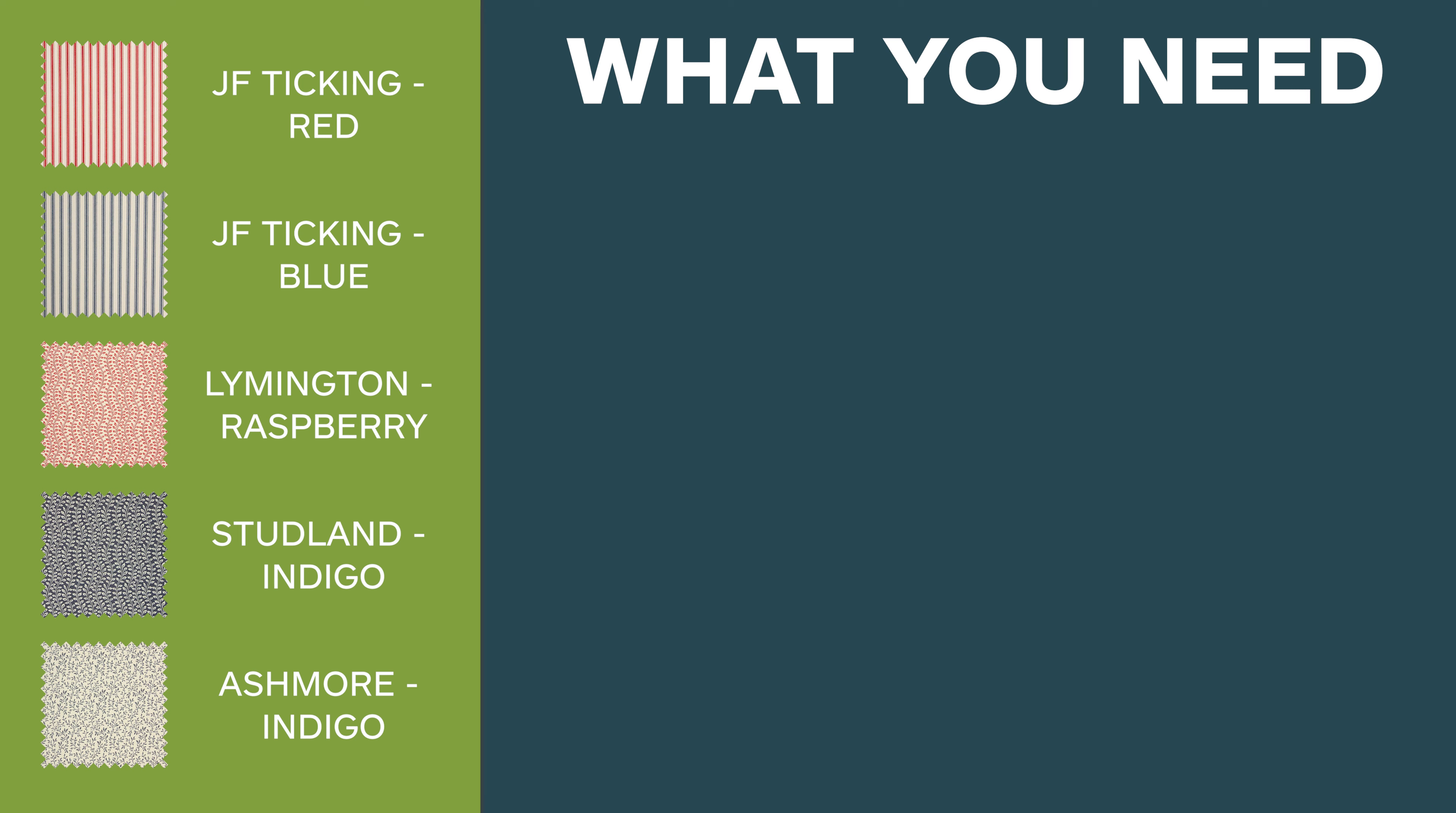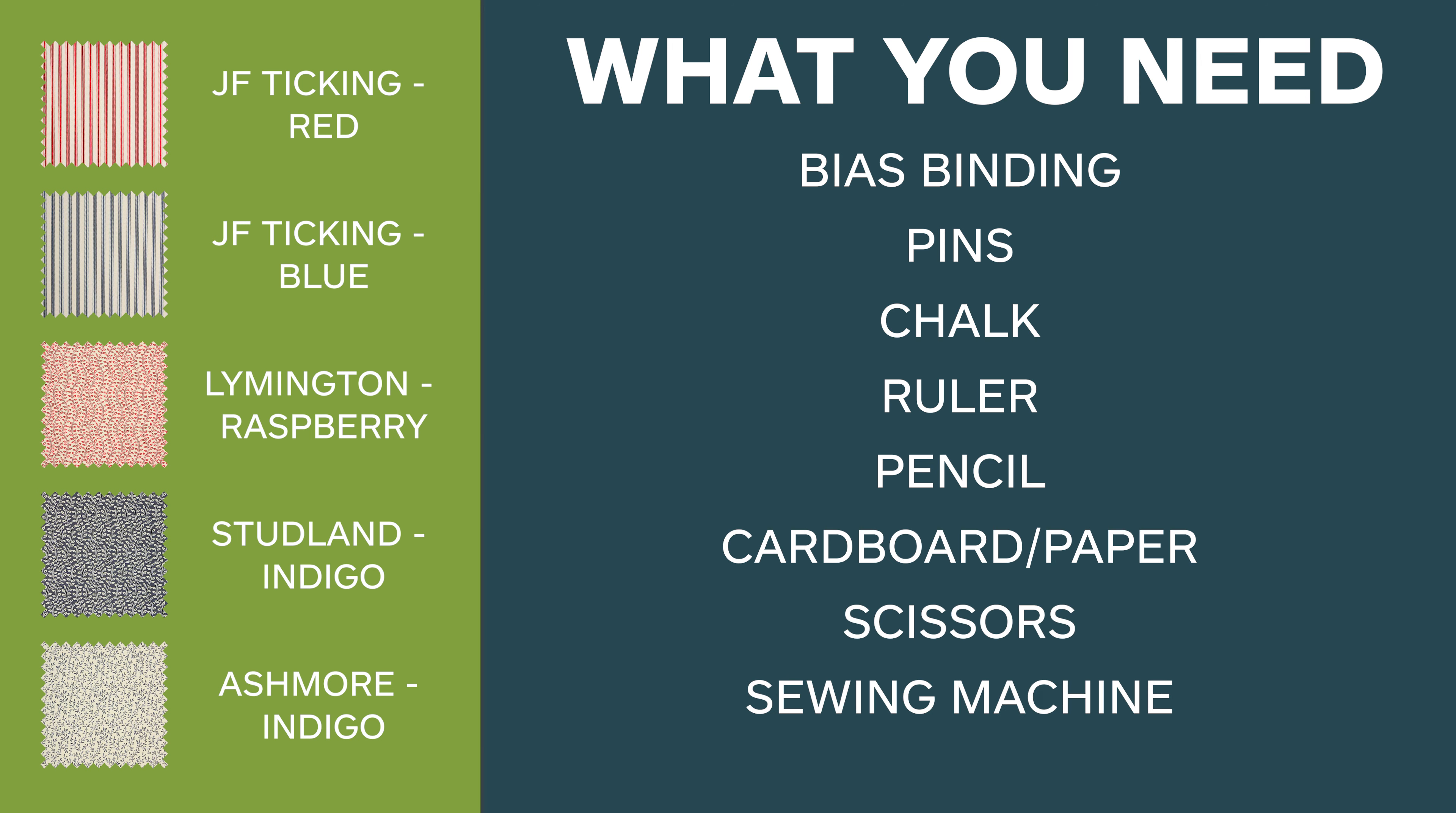You'll also need some bias binding or some ribbon, some pins, a tailor's chalk or fabric marker, a ruler, a pencil, some cardboard or paper for your stencil, and scissors and a sewing machine.